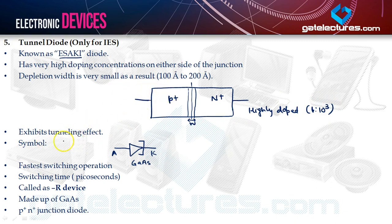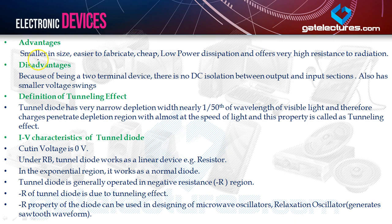The tunnel diode exhibits a tunneling effect. It has the fastest switching operation — switching time is of the order of picoseconds. It is also known as a negative resistance device or minus-R device, generally made of gallium arsenide or direct bandgap semiconductors. It is a P+N+ junction diode. Advantages: smaller in size, easier to fabricate, cheap, low power dissipation, and offers very high resistance to radiation. Disadvantage: being a two-terminal device, there is no DC isolation between output and input sections, and it has smaller voltage swings.